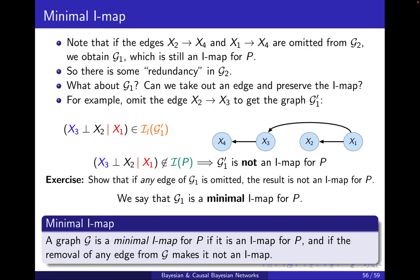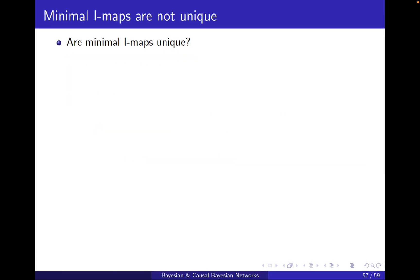Formally, a graph G is a minimal IMAP for P — not just an IMAP, but a minimal one — if it is an IMAP, and additionally, the removal of any edge from that graph makes it no longer an IMAP. So every link counts. Now, are minimal IMAPs unique? Do I no longer need to check between several minimal IMAPs?